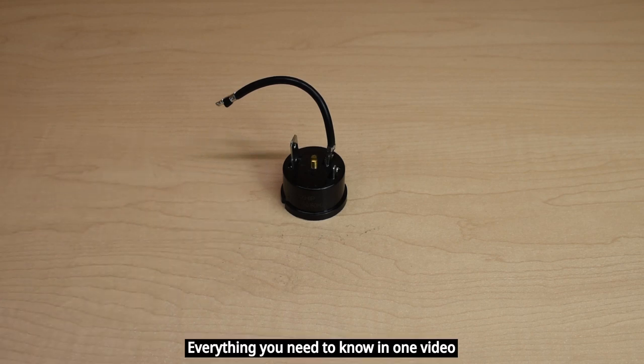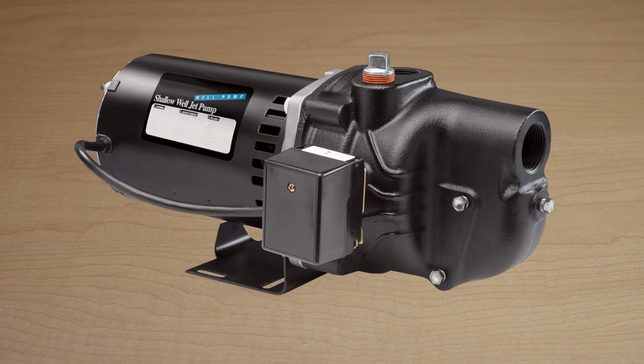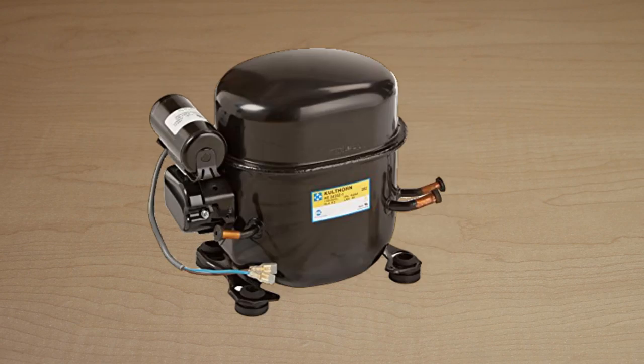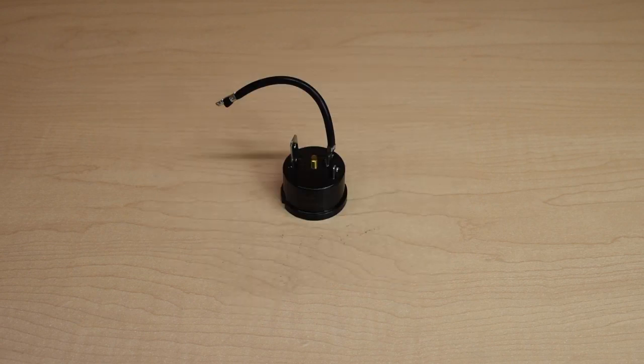Overload protectors are used in all types of electric motors but most commonly seen in swimming pool, well pump, sprinkler, as well as hermetically sealed refrigeration and air-conditioned compressor motors.